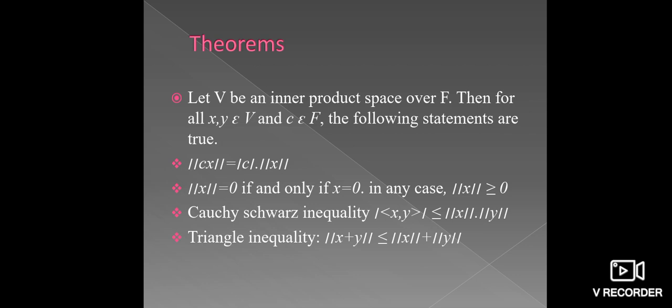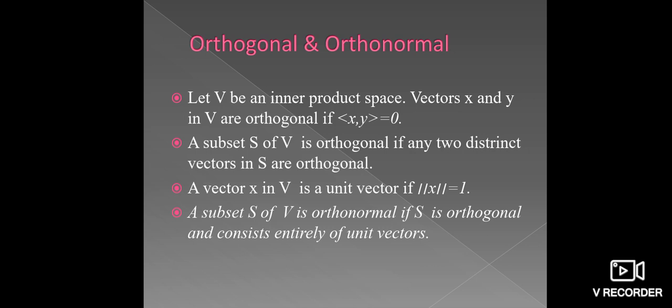Cauchy-Schwarz inequality: the modulus of the ordered pair (X, Y) is less than or equal to the norm of X times the norm of Y. Triangle inequality: the norm of (X+Y) is less than or equal to the norm of X plus the norm of Y. Orthogonal and orthonormal: let V be the inner product space. Vectors X and Y belonging to V are orthogonal if the ordered pair (X, Y) equals 0. A subset S of V is orthogonal if any two distinct vectors in S are orthogonal. A vector X in V is a unit vector if the norm of X equals 1. A subset S of V is orthonormal if S is orthogonal and consists entirely of unit vectors.